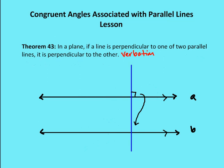In Theorem 43, in a plane, if a line is perpendicular to one of two parallel lines, it's going to be perpendicular to the other. If I have one angle here that's a right angle, then this line segment is perpendicular to line A, and I know it's going to be perpendicular to line B as well. We can think about this in terms of slope: if this is segment C, the slope of A is the opposite reciprocal of C, and the slope of B is also the opposite reciprocal of C. So C is perpendicular to both A and B.